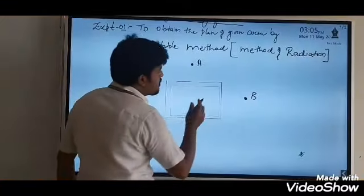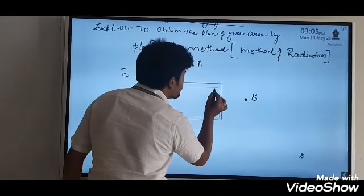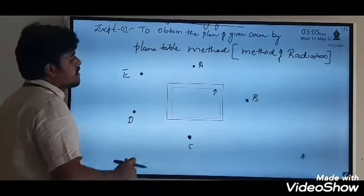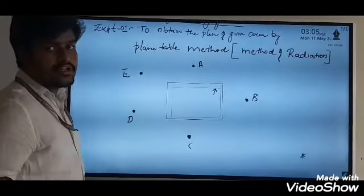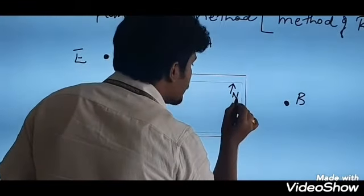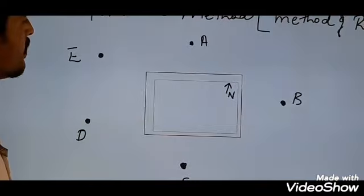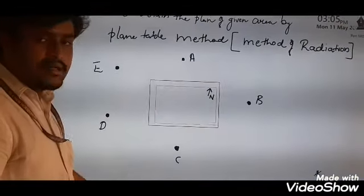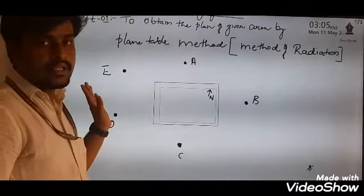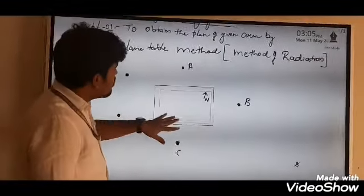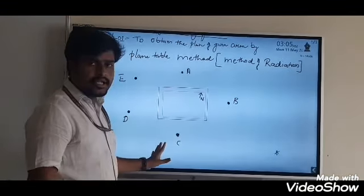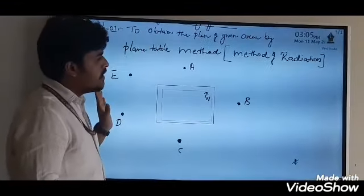Once the direction of north is known, it is marked on the right-hand top corner of the drawing sheet. We will once again check whether the plane table and the drawing sheet are properly leveled by using the spirit level. Once the drawing sheet is properly fitted on the plane table, we will start radiating the lines.